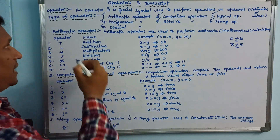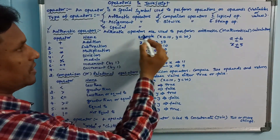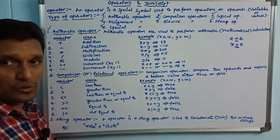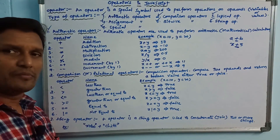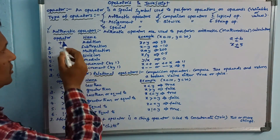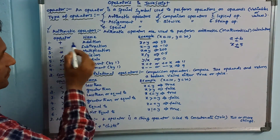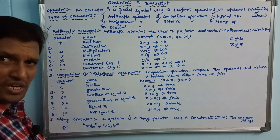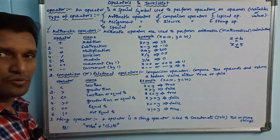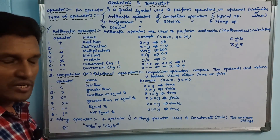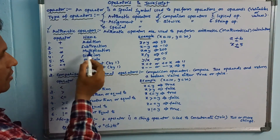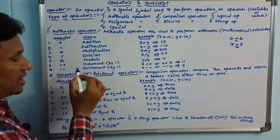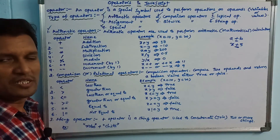First, arithmetic operators are used to perform arithmetic calculations — simple mathematical calculations. For example, if x value is 20 and we do x plus y, that is simple arithmetic. The arithmetic operators are: plus for addition, minus for subtraction, star for multiplication, slash for division, modulus, plus-plus for increment, and minus-minus for decrement.